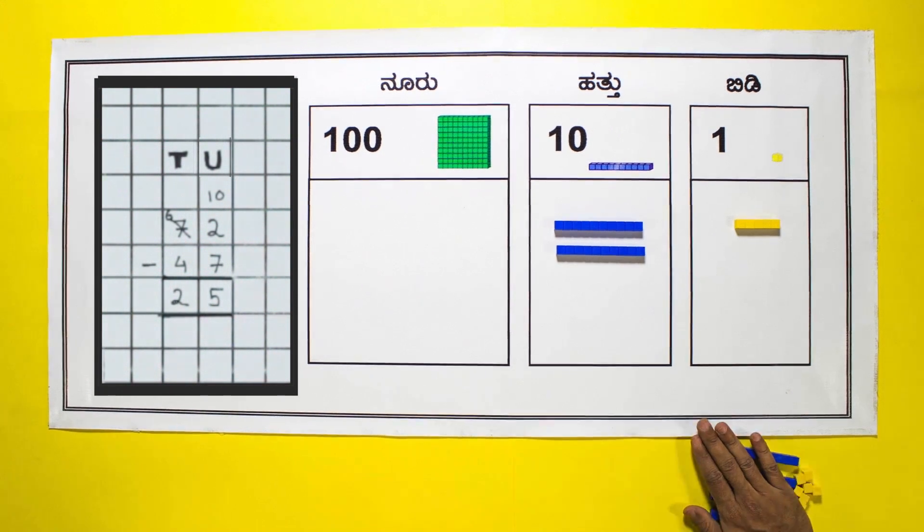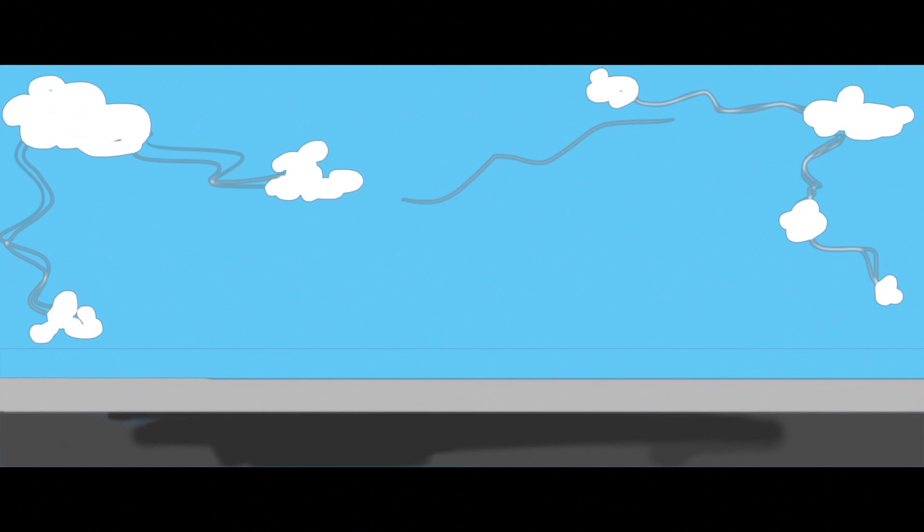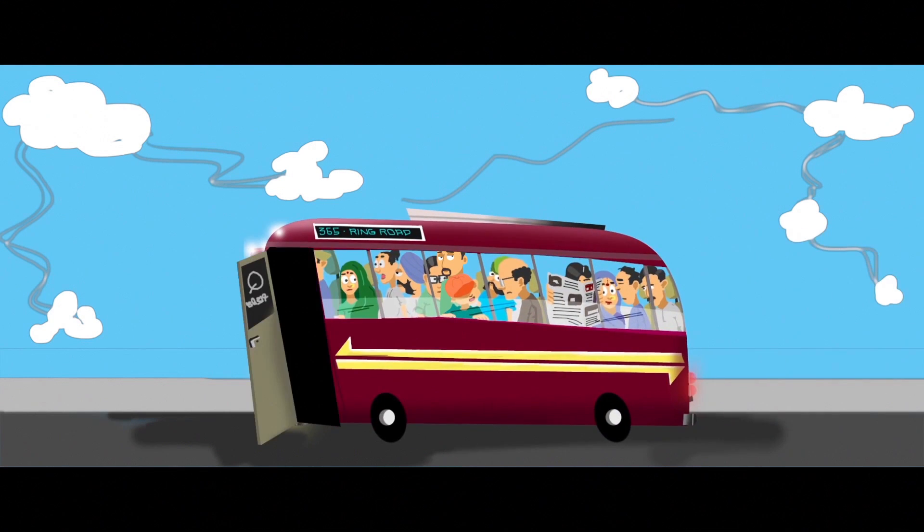Verify that the correct subtrahend 47 has been taken away, then move it away. Thus 72 minus 47 gives 25.